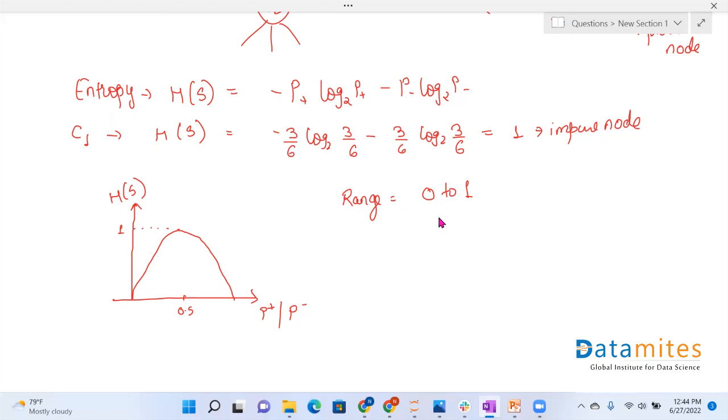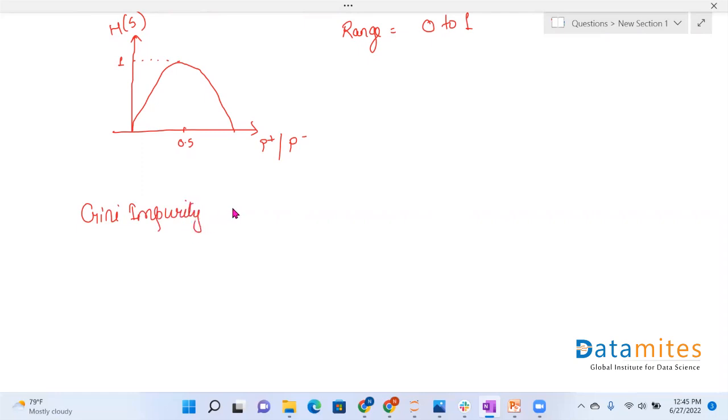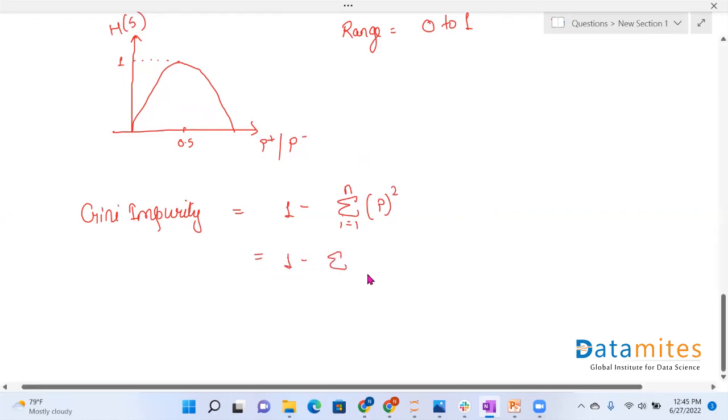The another factor that we can calculate is Gini impurity to find out if a node is pure or not. The formula for Gini impurity is given by 1 minus summation of i equals 1 to n probability square. That can be further opened into 1 minus P plus square plus P minus square.